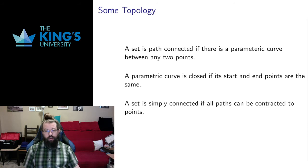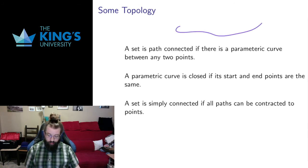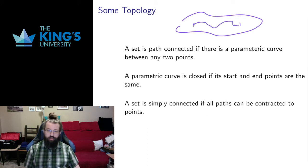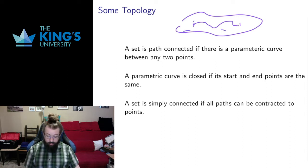A set is called path connected if there's a parametric curve between any two points. So if I have some set in Rⁿ with a point here and a point there, and if I can make a parametric curve between the two points that stays inside the set, and if I can do that for any two points in the set, then the set is called path connected.